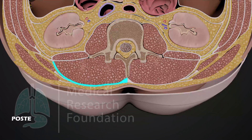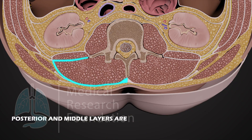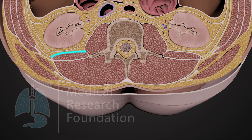The posterior and middle layers are thick, dense, and strong, but the anterior layer is thin and not so strong.